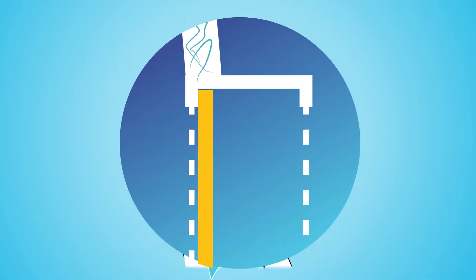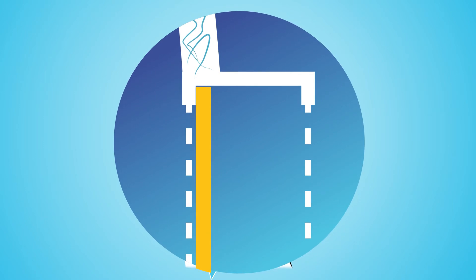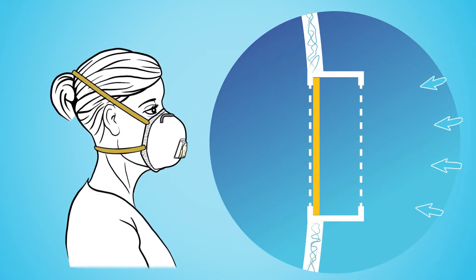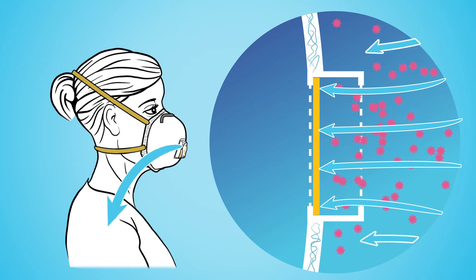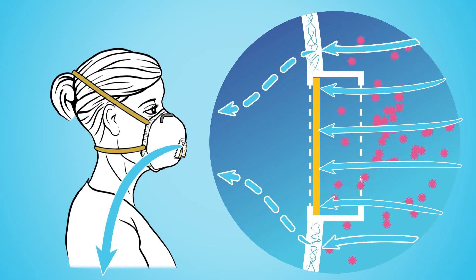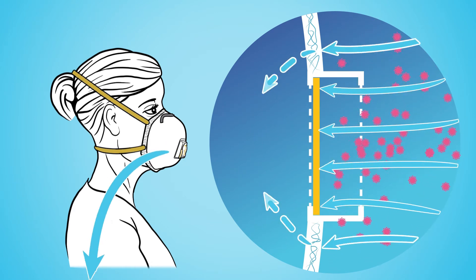As you inhale, the membrane remains in its flat, closed state that adheres to the seat firmly. In the closed state, the membrane blocks the incoming air and airborne particles, and you breathe filtered air through the dense meshwork of fibers that compose the respirator.